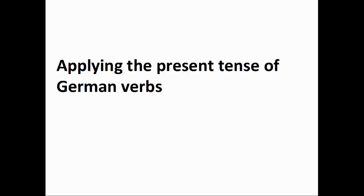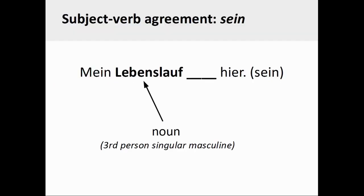Let's now take a look at how we could apply the present tense conjugation pattern of German verbs. The explanations that follow will help you to complete the related online course activity. In the example you see on the screen, the infinitive verb sein, or 'to be,' needs to be conjugated so that it agrees in both number and person with the subject of the sentence, mein Lebenslauf. Closer examination of the noun Lebenslauf reveals that it is the singular and not the plural form of the noun.